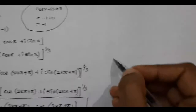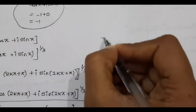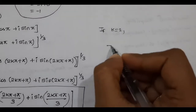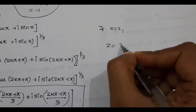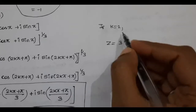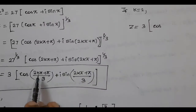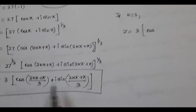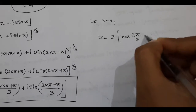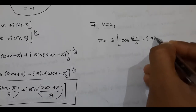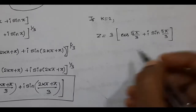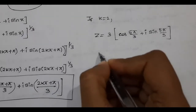Third root: if k = 2. Substituting k = 2: 4π + π = 5π, so z = 3 × [cos(5π/3) + i sin(5π/3)].